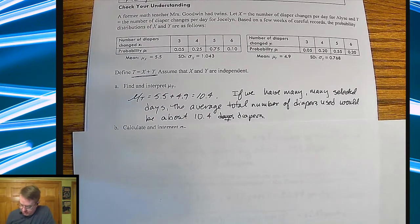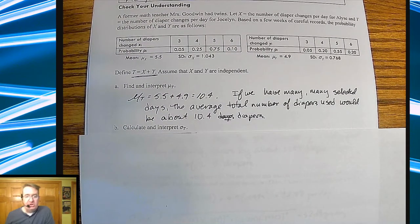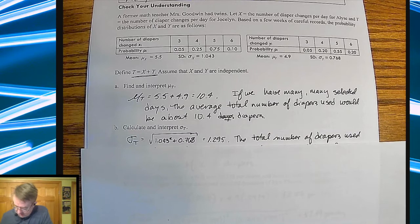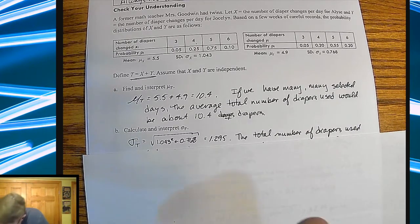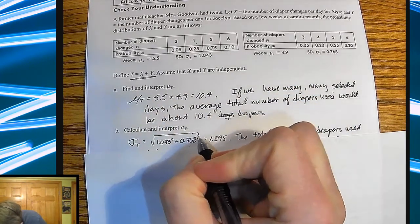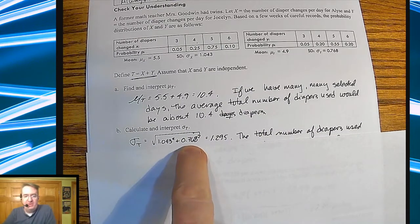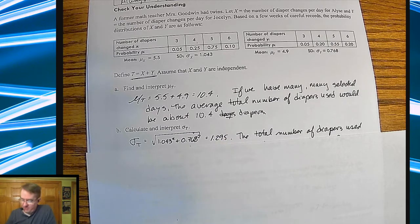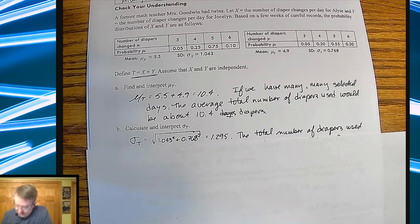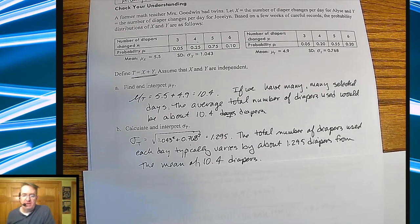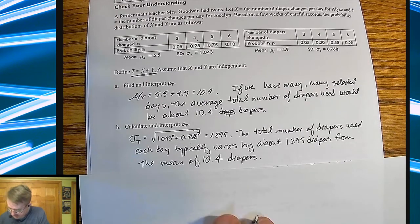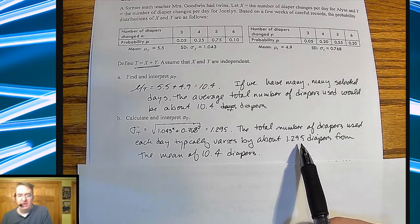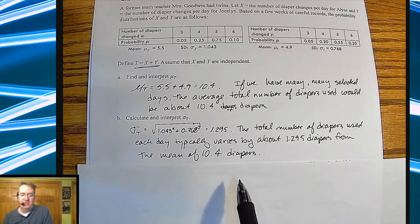And then for, you're going to actually go find the standard deviation of T. Now remember, you have, you're going to add the two, but you have to square the two standard deviations together, and then take the square root out. So we're going to go ahead, you didn't see that part, square the two standard deviations, and add them up, take the square root. So we get 1.295, and that interpretation means that the total number of diapers used typically in a day varies by about 1.295 diapers from the mean of 10.4 diapers.